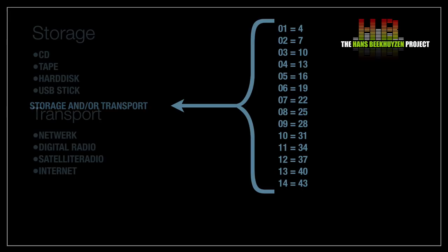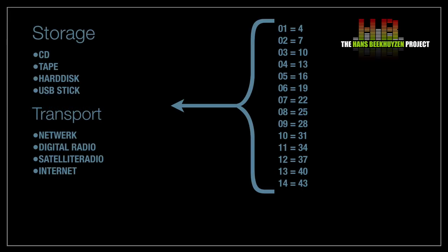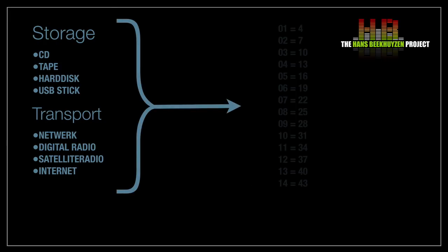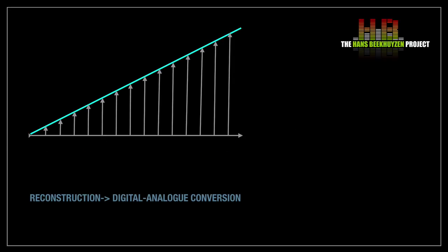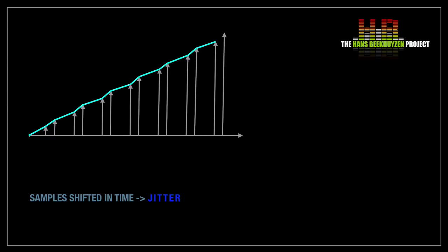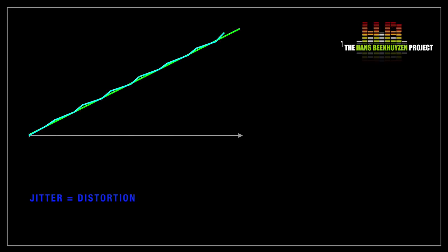This table can be stored for future use or transported to another location. At the place of reproduction, the table is read again and used to plot the voltages by means of a digital-to-analog converter. When passed through the reconstruction filter, the straight line reappears — unless something went wrong. The biggest problem that can occur is inaccurate timing of the reconstruction of the voltages, causing the straight line not to reappear correctly. The second potential problem is that the plotted voltages deviate from the original — being higher or lower than intended — but this hardly ever happens nowadays, at least not to a degree that becomes easily audible.